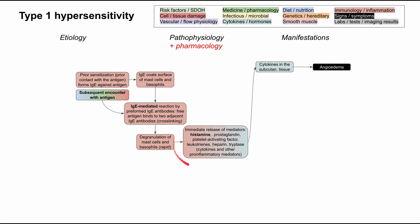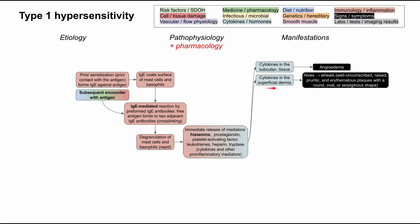These mediators have broad reaching effects throughout the body. Some are localized — in the subcutaneous tissue, you might have angioedema, a swelling of the skin, particularly concerning around the throat as it may restrict the airways. In the superficial dermis, cytokines can result in hives, and when hives get big, we call them wheals — well-circumscribed, raised, erythematous plaques with a round, oval, or serpiginous shape.